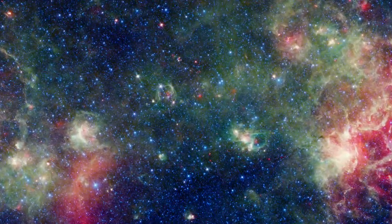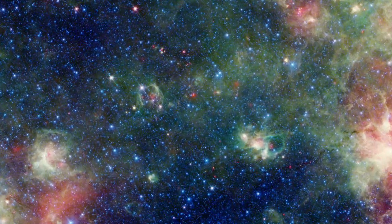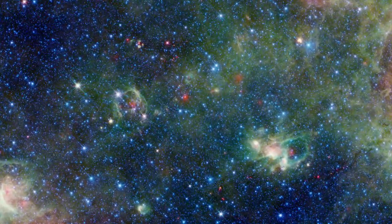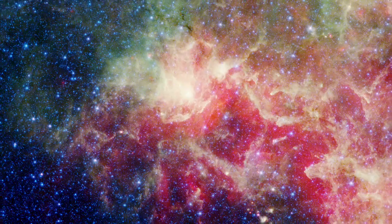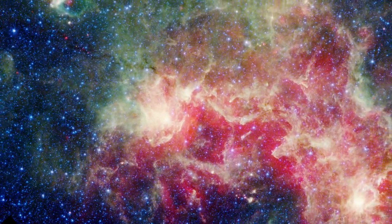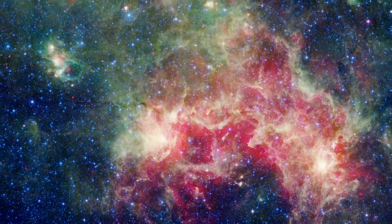NASA's Spitzer Space Telescope provides a strikingly different view of the same region. At much shorter wavelengths, from 3.6 to 24 microns, we see stars and the hot dust around stellar nurseries.